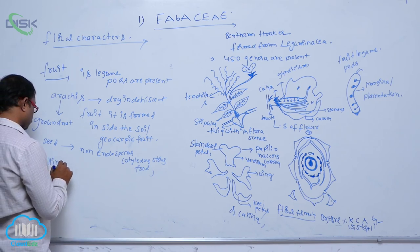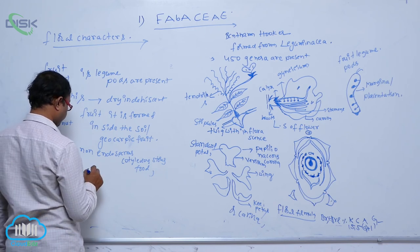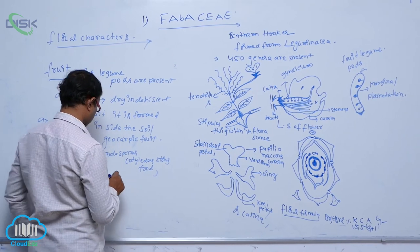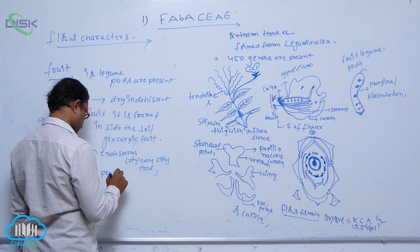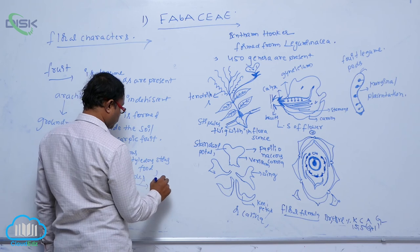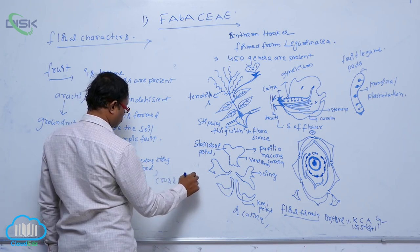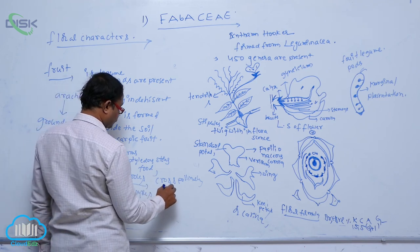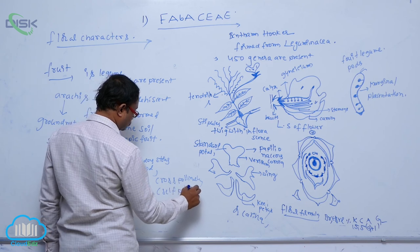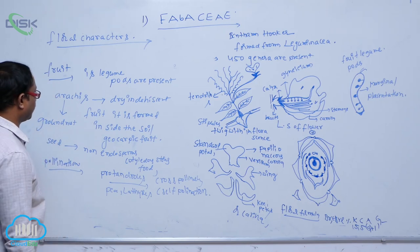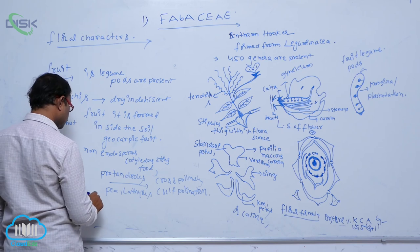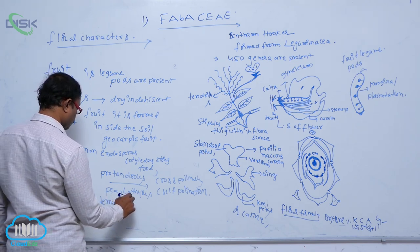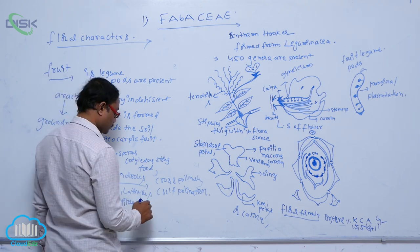After that, pollination. Generally, protandry leads to cross-pollination. Cross-pollination takes place by insects — that is known as entomophilous. By the papilionaceous corolla, the piston mechanism is present.